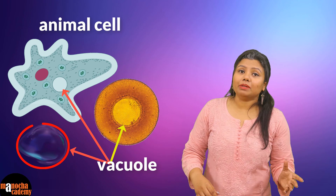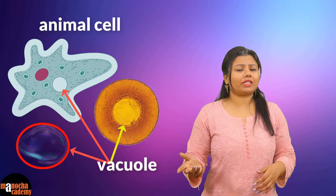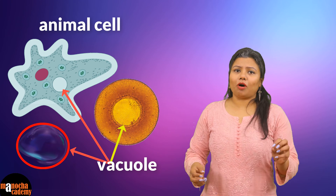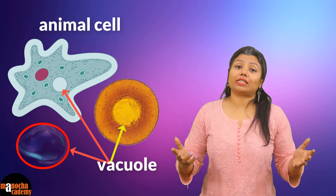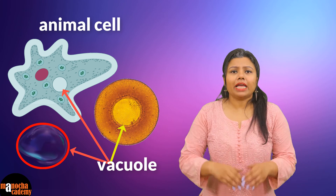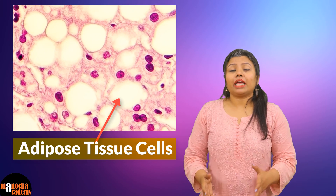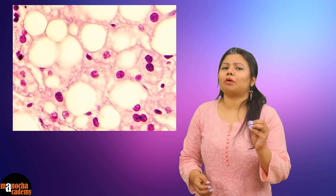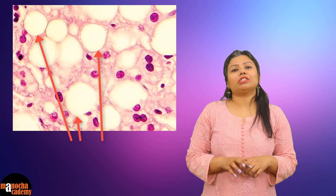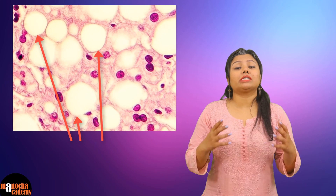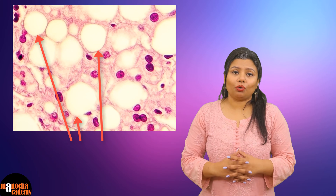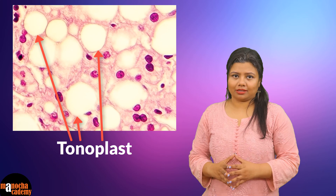In the case of animal cells, depending on what type of cell it is, small, medium, or large vacuoles can be found. For example, in a fat cell, we find a very large central vacuole storing fat. Whereas in other cells, you will find smaller vacuoles. The membrane that surrounds the vacuole is a single membrane known as the tonoplast.